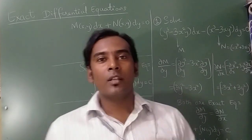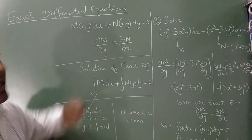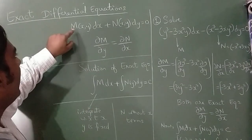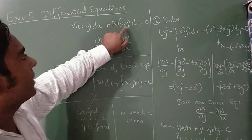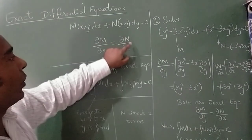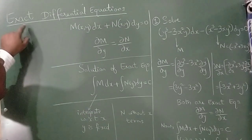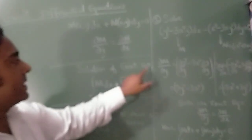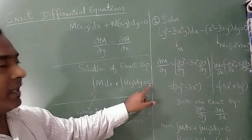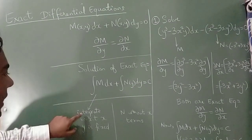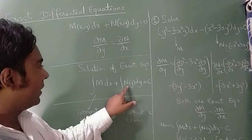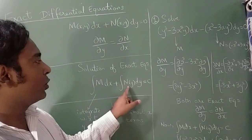Welcome to the channel. Today I'm going to teach exact differential equations and the method of solving them. The form is M(x,y) dx + N(x,y) dy = 0. The condition for exactness is ∂M/∂y = ∂N/∂x. The solution is: integration of M dx plus integration of N (terms without x) dy equals C, where y is kept fixed during integration with respect to x.